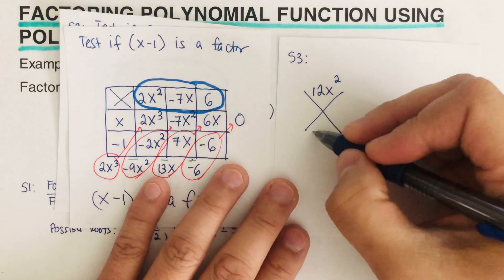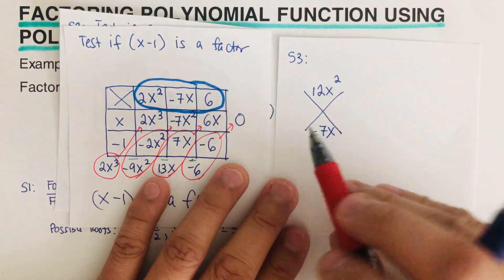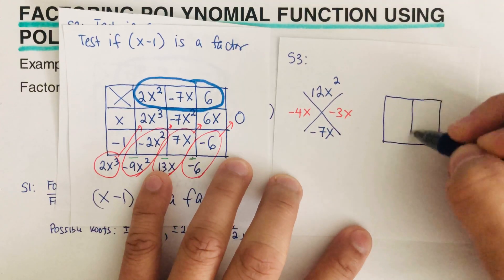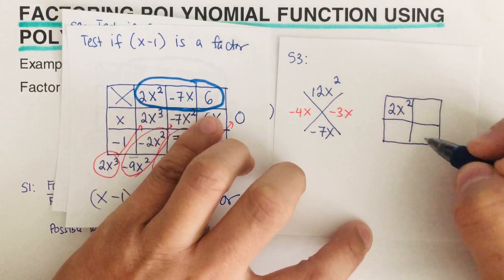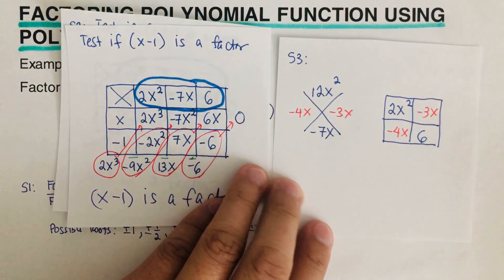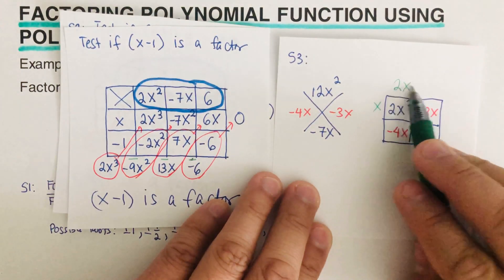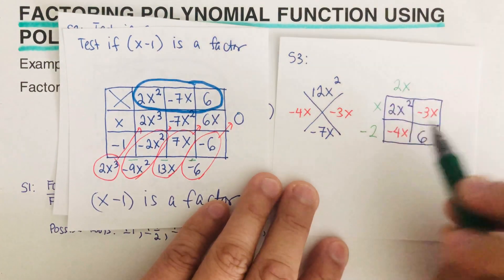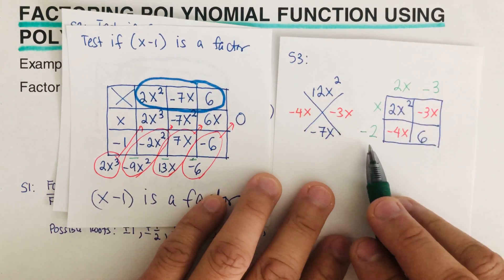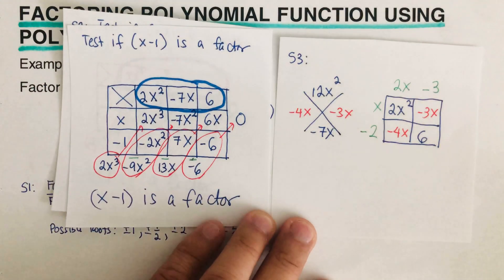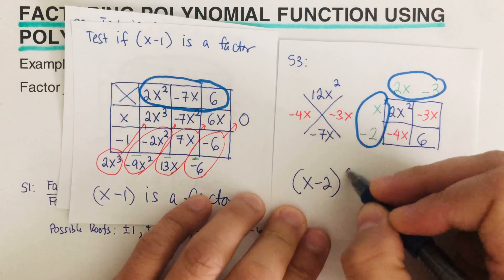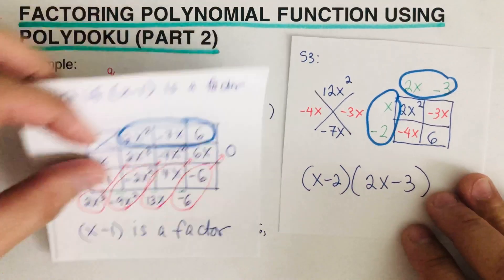We need to figure out what factors give us 12x squared as a product and negative 7x as a sum — those would be negative 4x and negative 3x. Using the area model, we write the first term 2x squared and the last term 6. Then negative 3x here and negative 4x in red. The factors come out to 2x and x on one side. If 2x times x is 2x squared, this should be negative 2, since 2x times negative 2 is negative 4x. And this is negative 3, since negative 3 times x is negative 3x, and negative 3 times negative 2 is positive 6.